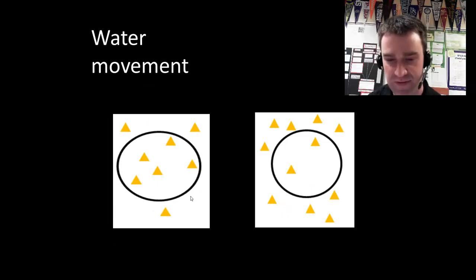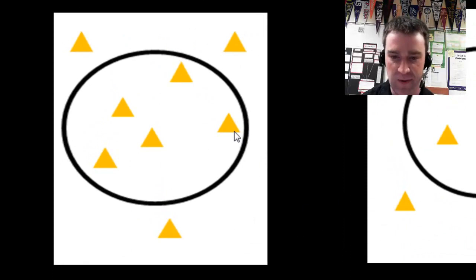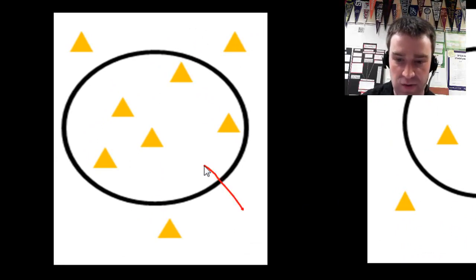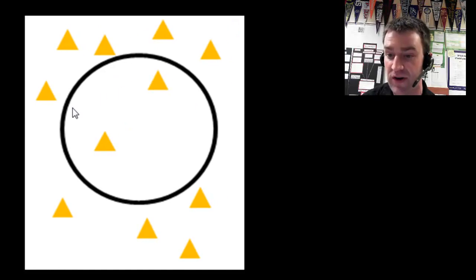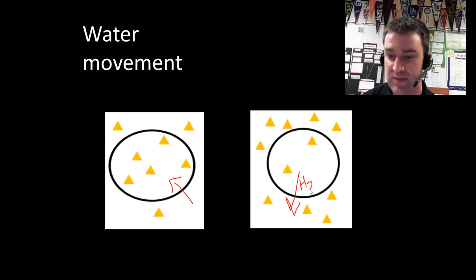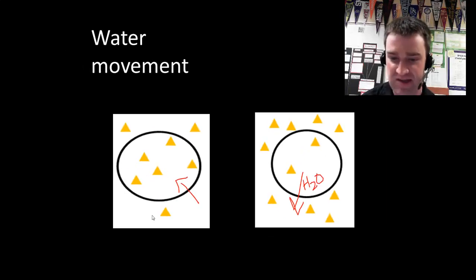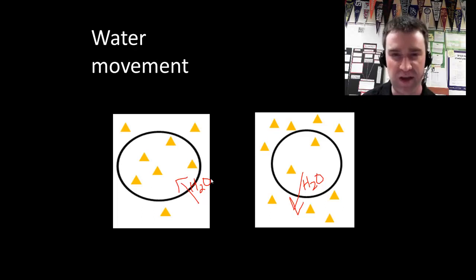In the example on the left, there's higher solute concentration inside the cell, so water moves in through osmosis. In the example on the right, there's greater solute concentration outside the cell, so water would net move out by osmosis. It helps to write H₂O by your arrows to convince yourself that it's the water molecules moving here, not the solute particles.